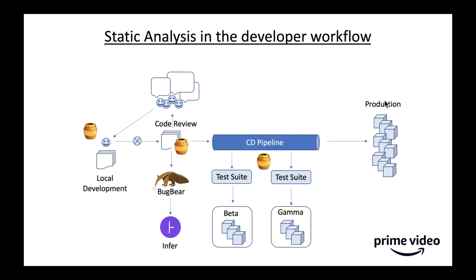When we get analysis results back from Infer, we compare it with the diff and post it back to the code review as comments — saying 'here's a race condition' or 'here's a null pointer exception.' This works really well because the developer has the context and is incentivized to fix the bug before it gets pushed to production. We chose Infer because it's easy to use, easy to integrate with, and biases toward less noisy results, which means less angry engineers and more bugs get fixed.